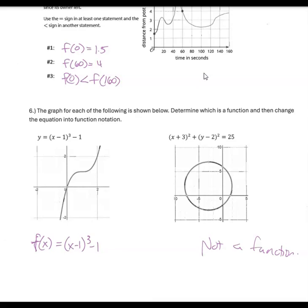The last part asks you to figure out which one is a function using the vertical line test, and if it is, write it in function notation. The first one passes the vertical line test, so I changed Y to F of X. Note that since there's an X in the equation, that's why it's F of X — if it were G minus 1 cubed minus 1, it would be F of G, because G is the variable in the equation. Here we have X, so it's F of X. The next one does not pass the vertical line test, so it is not a function and I will not write it in function notation.